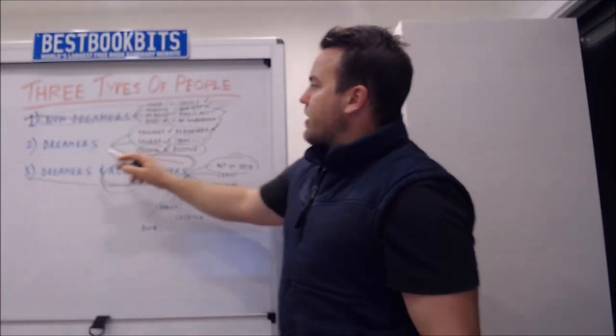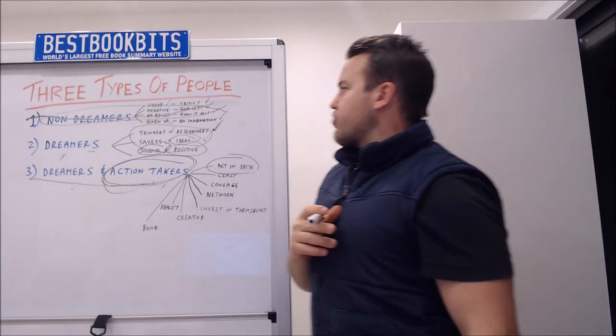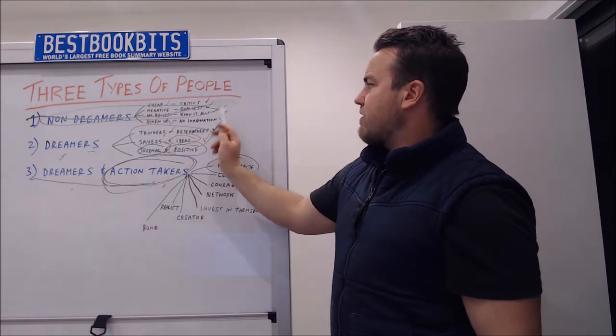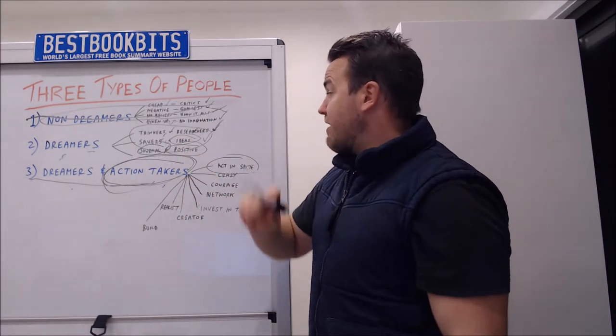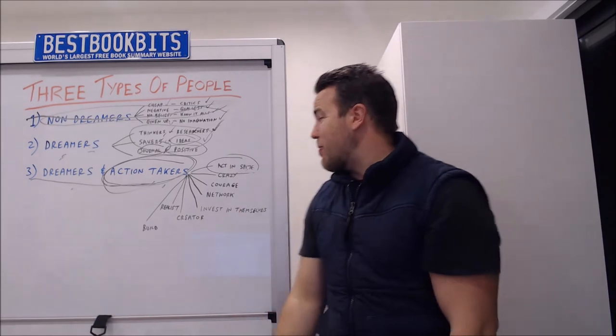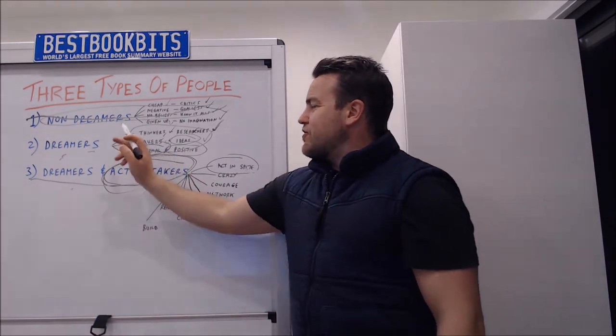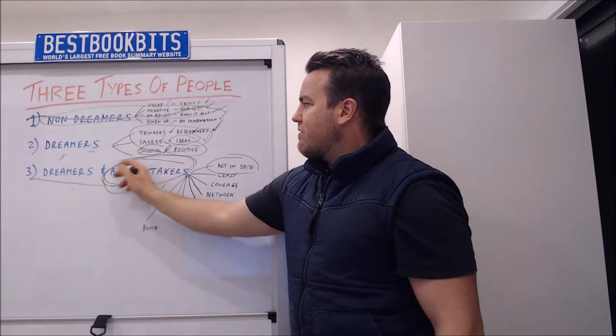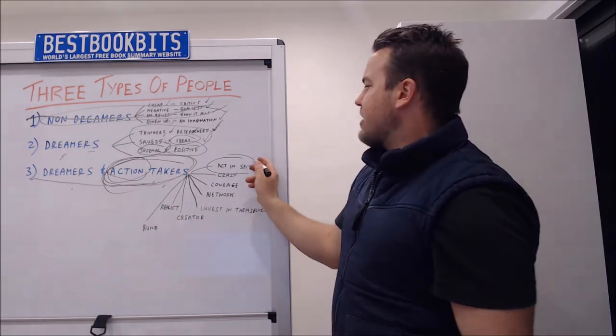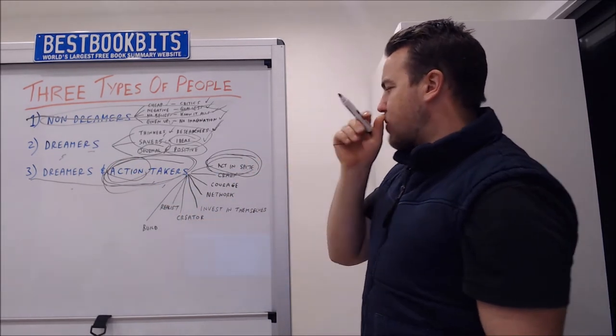They graduated to number two which was dreamers. So yes they think. Yes they research. Yes they save. Yes they have ideas. Yes they journal. And yes they are positive. But the difference between one, two and three is this little word here and that is action. And the biggest one is act in spite of.